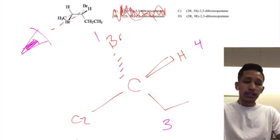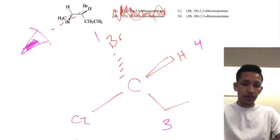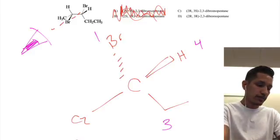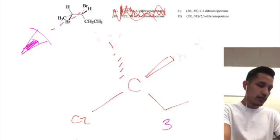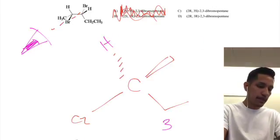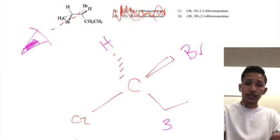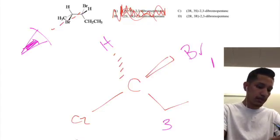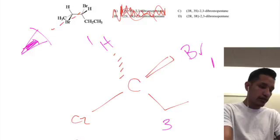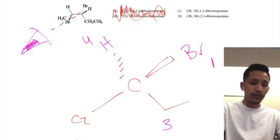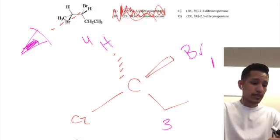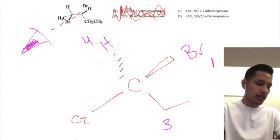So now we're going to do the same thing where we want our fourth priority group going away from us. We're going to flip the bromine and the hydrogen because the bromine is in the away position. We're going to put our hydrogen here and our bromine here, so now the fourth priority group is going away from us.